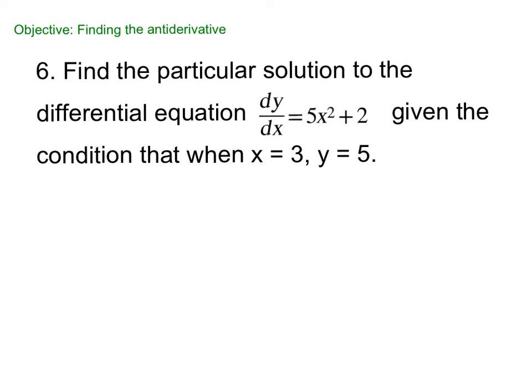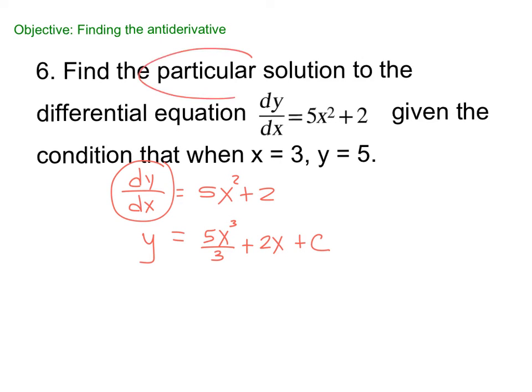All right. So find the particular solution to the differential equation, given the condition that when x equals 3, y equals 5. So we have dy/dx equals 5x squared plus 2. So think about this. Whose derivative is dy/dx? Just y, right? The derivative of y is dy/dx. What's the antiderivative of 5x squared? So we add 1, 2 plus 1 is 3, and divide by 3. Divide by your exponent, plus whose derivative is 2. I'm going to throw an x in there, and then we have our plus C.